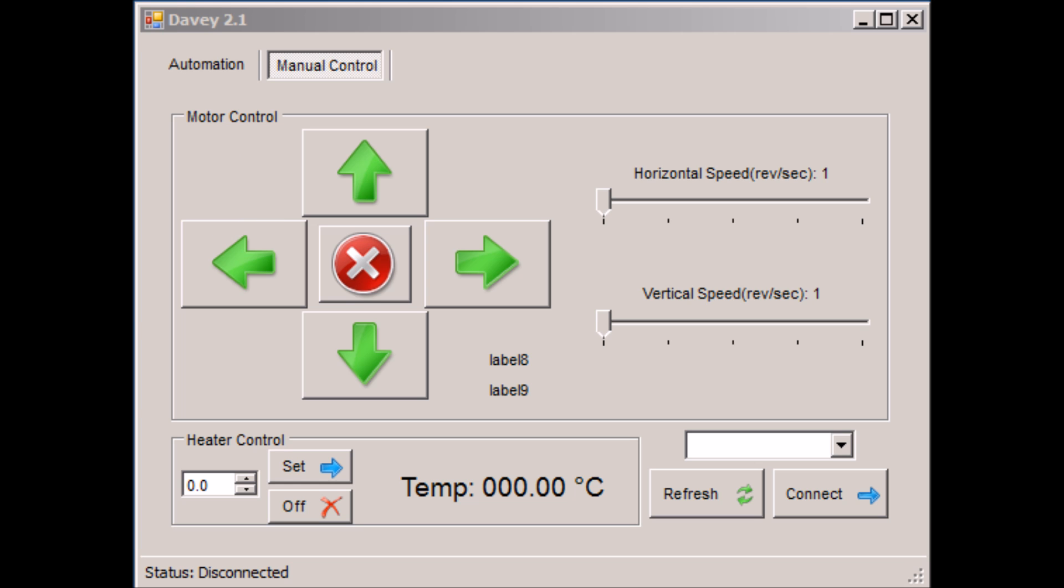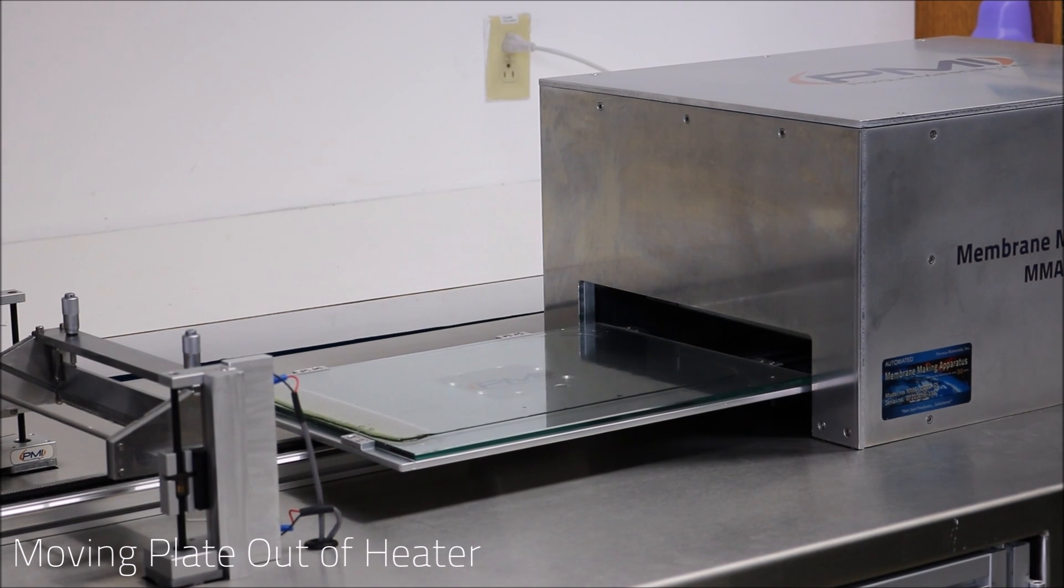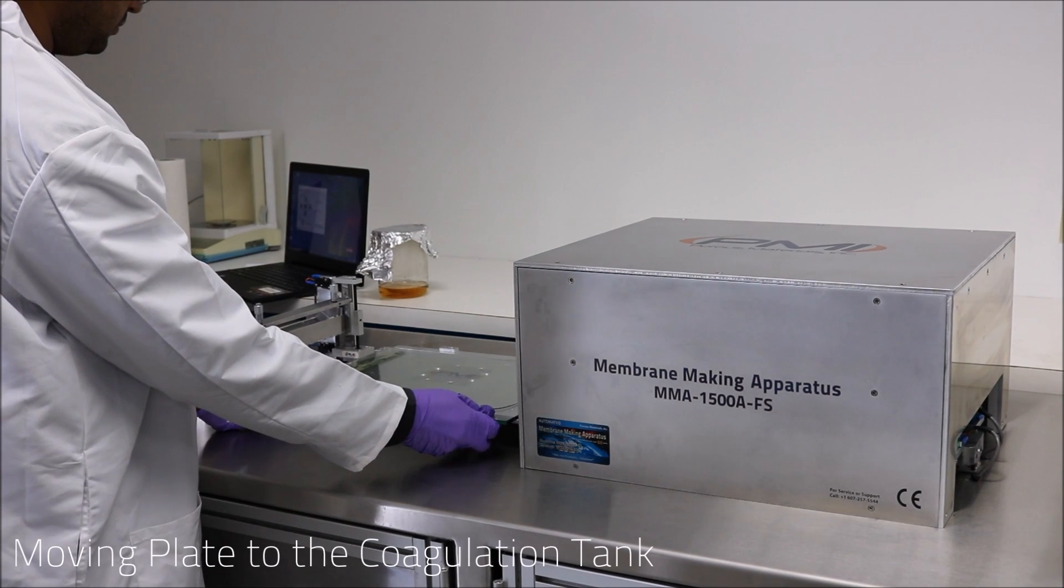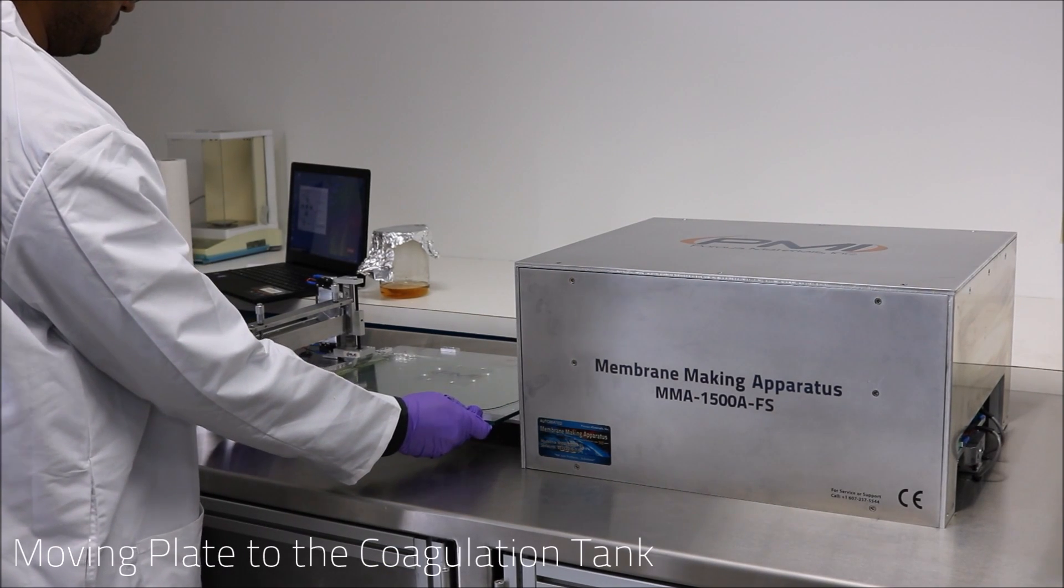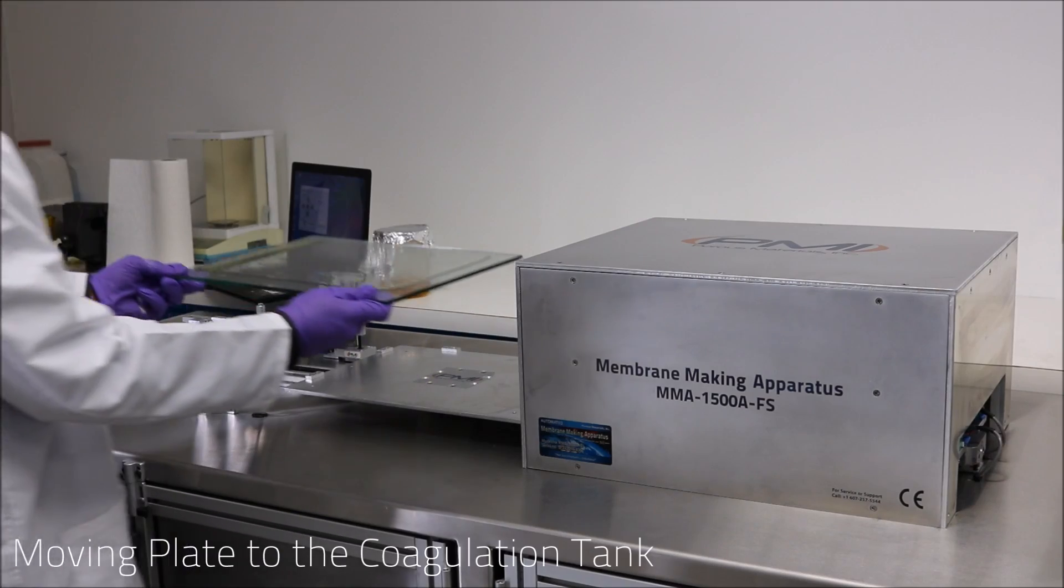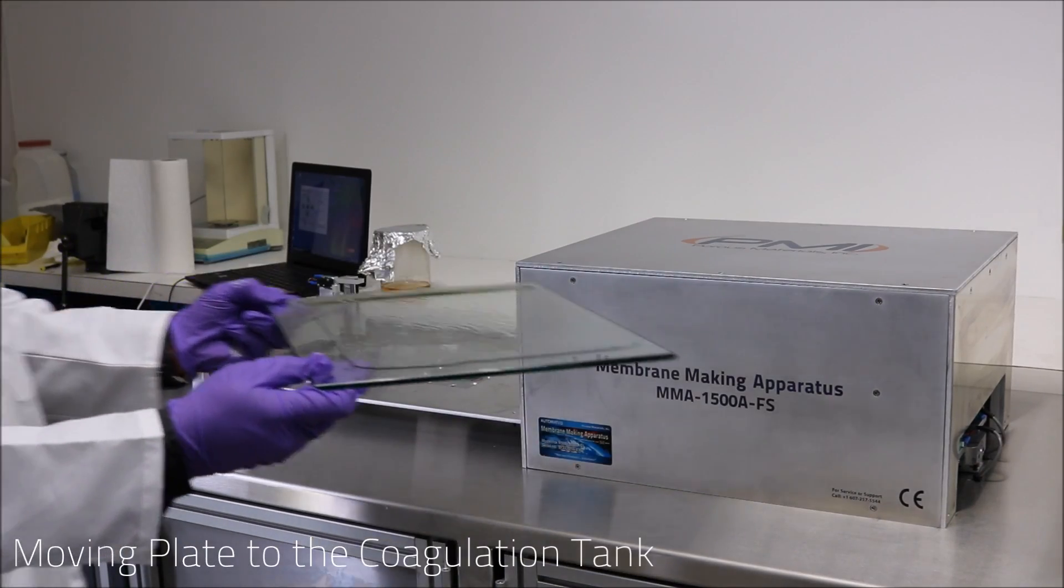Next, we will back the membrane casting plate out of the oven and allow it to cool. After the plate is cool enough to handle, firmly grasp it around the outer edges and transport it over to the coagulation tank.